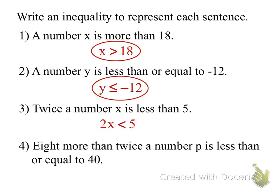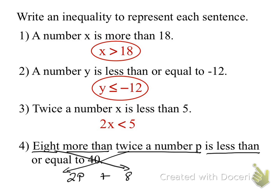Here's where it gets confusing. So 2P plus 8 — it has 'more than,' so right there, 'more than' means I switch my terms. 2P goes first, 8 goes after, and 'more than' means plus. Is less than or equal to — so we use the inequality symbol 'is less than or equal to' — and then 40. Do you see how both could be in the sentence?